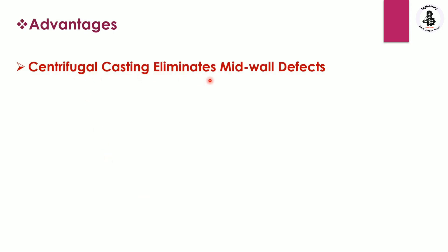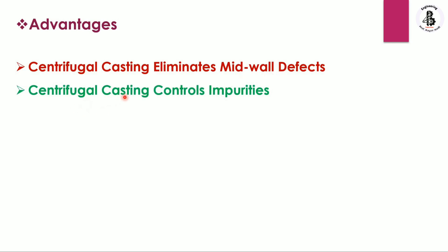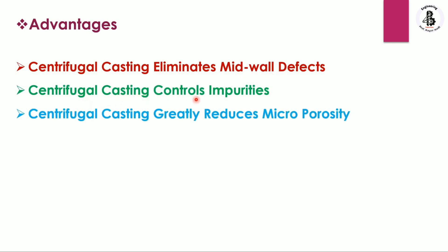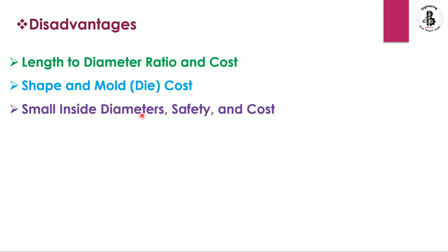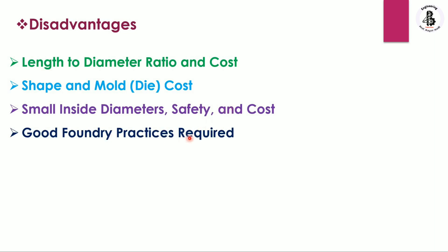Some advantages of true centrifugal casting are: it eliminates mid-wall defects, controls impurities, and greatly reduces micro-porosity during the solidification process. Some disadvantages include: length-to-diameter ratio limitations and cost, shape and mold die cost which increases the overall cost, small inside diameters present safety and cost challenges, and good foundry practice along with skilled operators are required.